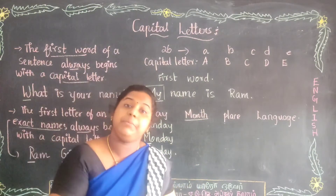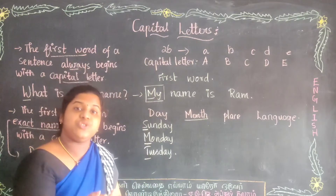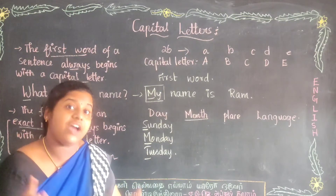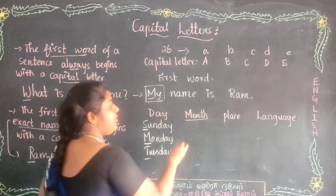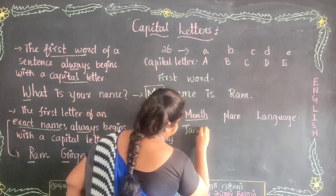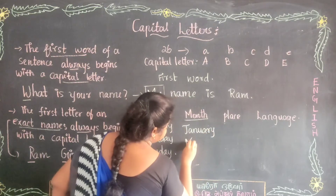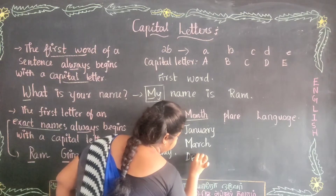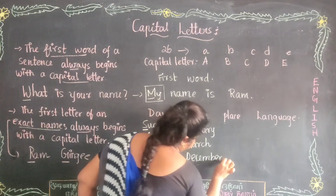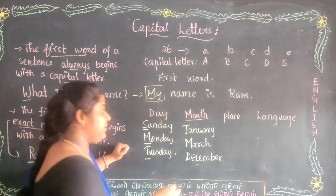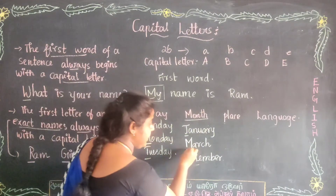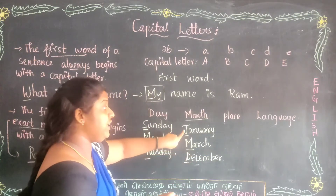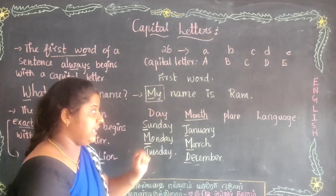We also use capital letters for months of the year: January, February, March, April, May, June, July, August, September, October, November, and December. These are all months. The first letters — J for January, M for March, D for December — all must be written in capital letters.